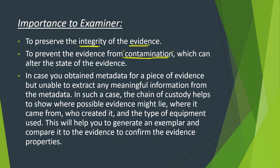In case you obtained metadata from a piece of evidence but are unable to extract any meaningful information from the metadata, the chain of custody helps to show where possible evidence might lie. Chain of custody indicates where the evidence comes from, who created it, and the type of equipment used. This will help you to generate exemplars and compare them to the evidence to confirm the evidence's properties.